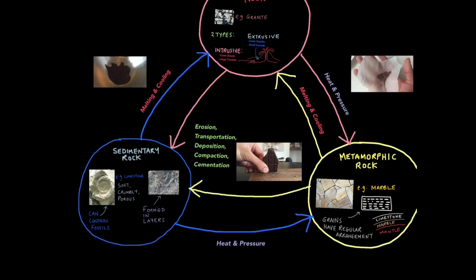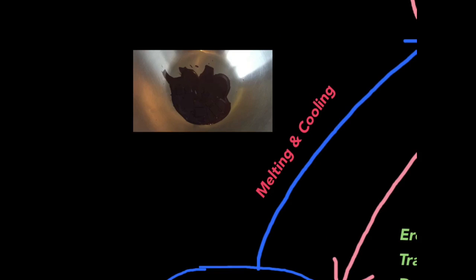But this is a cycle which means these are in a state of constant change. So what are the processes responsible for this change? To model this I'm going to use chocolate. Igneous rock forms when rock completely melts then rises and cools. This is why it will never contain fossils because any fossil will be destroyed in the melting process.